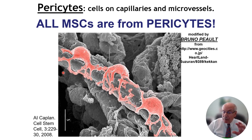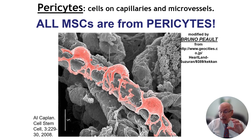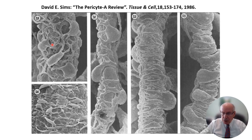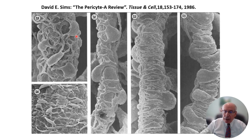Pericytes are also the vasocontractile elements of small blood vessels — so the blood pressure medication I took this morning affects this cell, not the endothelial cells of these blood vessels. All of these are pericytes, and they all look different because they have different tissue surrounding them. They're from very different tissues, and arterioles and venules have pericytes — even in the same tissue — that look different.